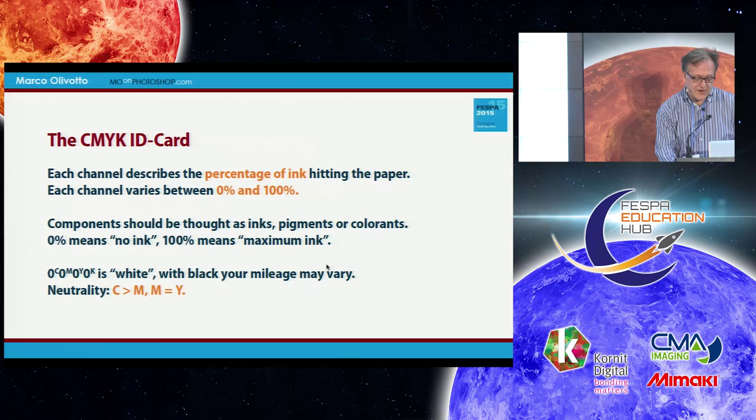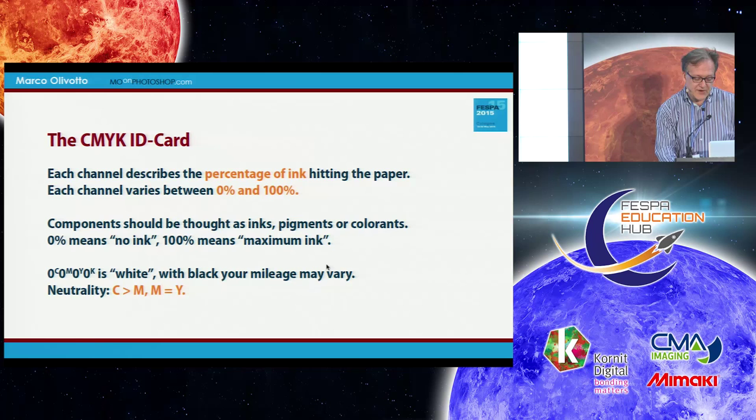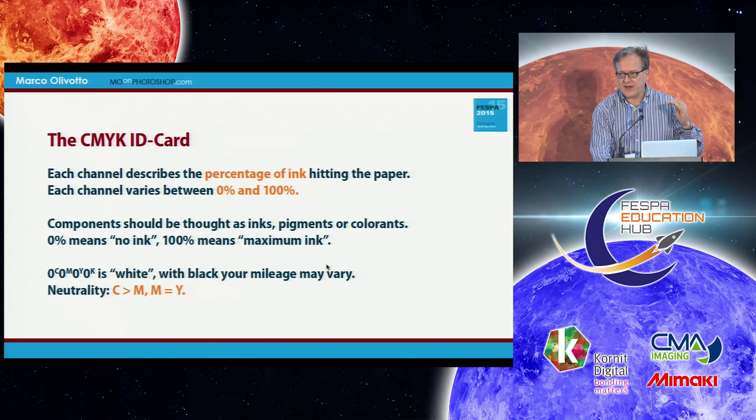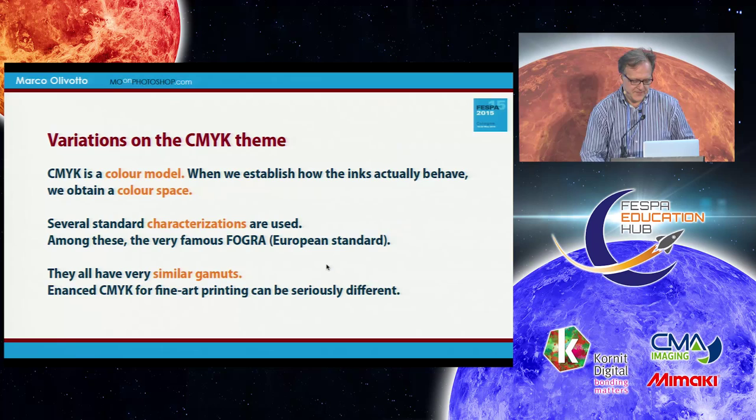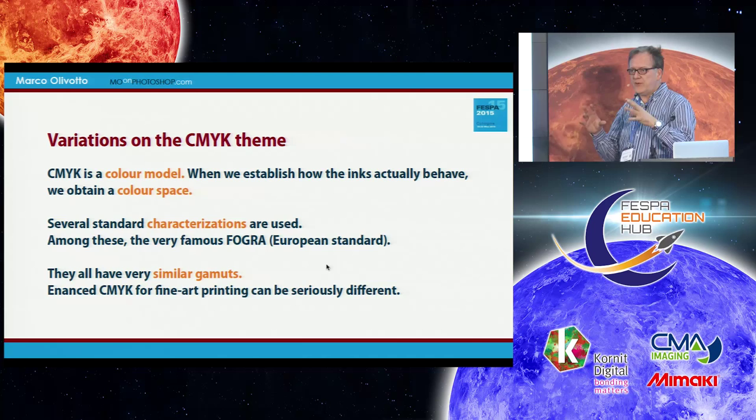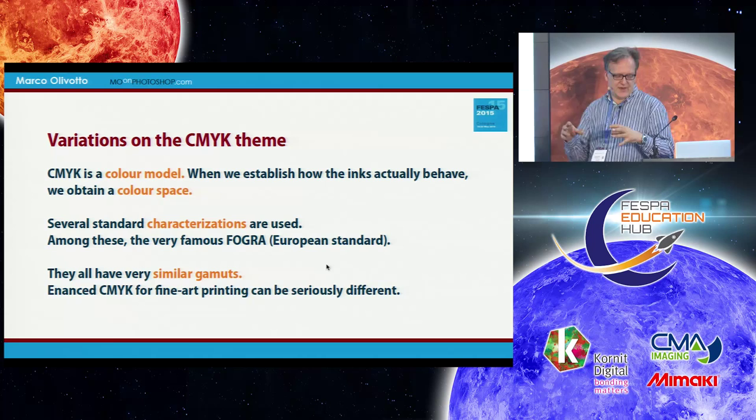There is a neutrality condition in CMYK: not three identical components, but magenta and yellow basically identical, and cyan a bit higher. How much higher depends on the formula, but generally higher. CMYK is a color model, and when we know how the inks behave when they hit the paper on a given machine, we obtain a color space.